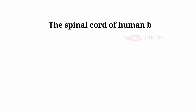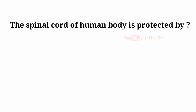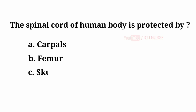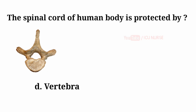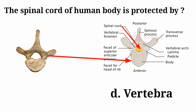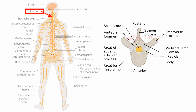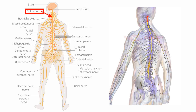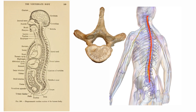The spinal cord of the human body is protected by: A. Carpals, B. Femur, C. Skull, D. Vertebra. And the answer is D. Vertebra. The spinal cord of the human body is protected by vertebra. Spinal cord is made up of bundles of nerve fibers. These nerve fibers run down from the brain through a canal in the center of the bones of the spine. These bones — the vertebrae — protect the spinal cord.